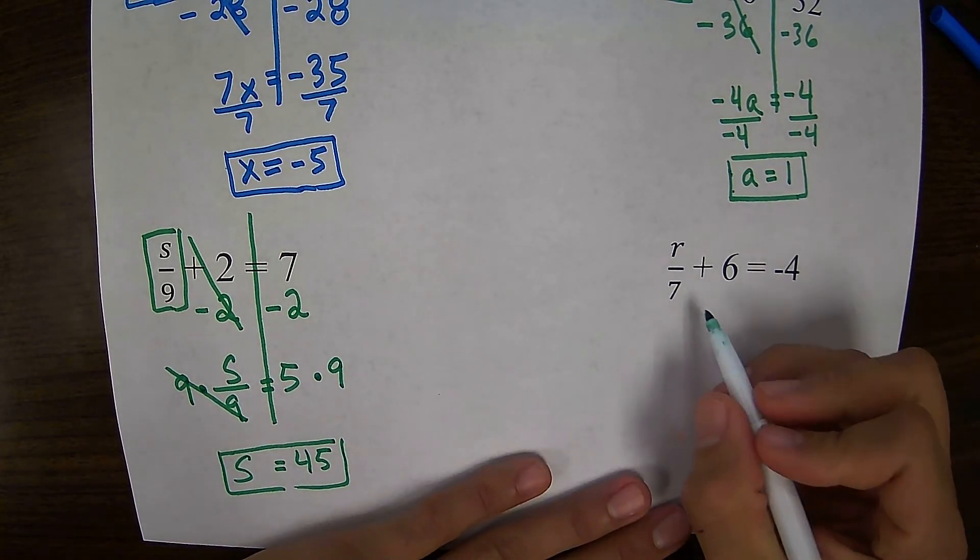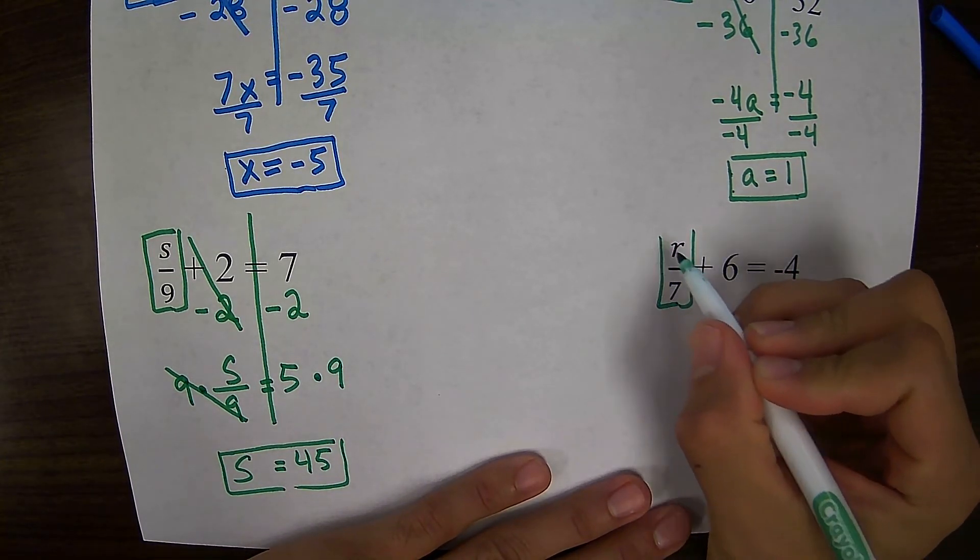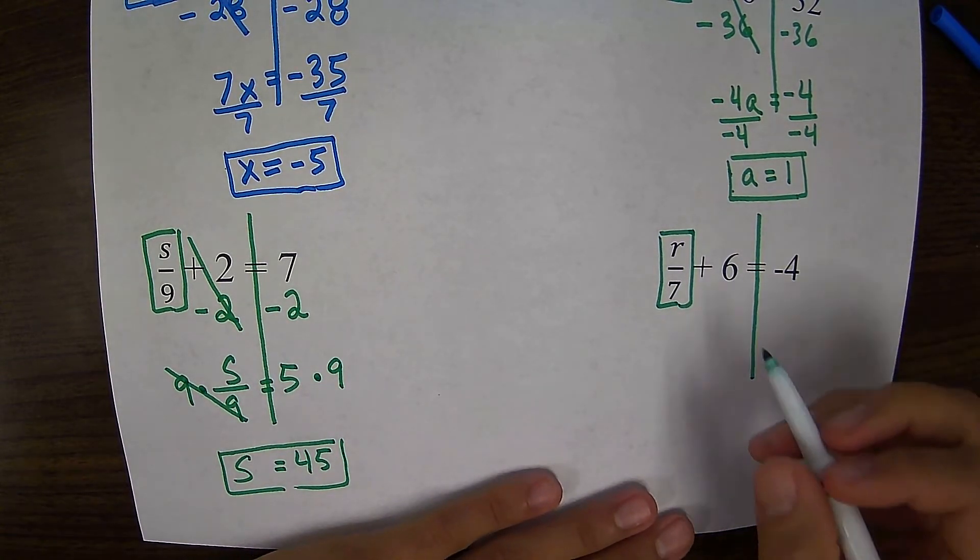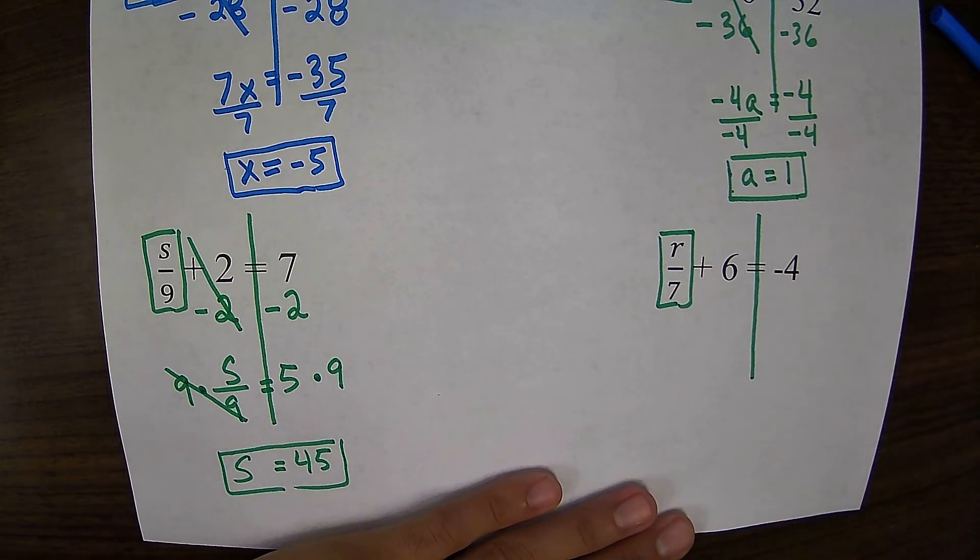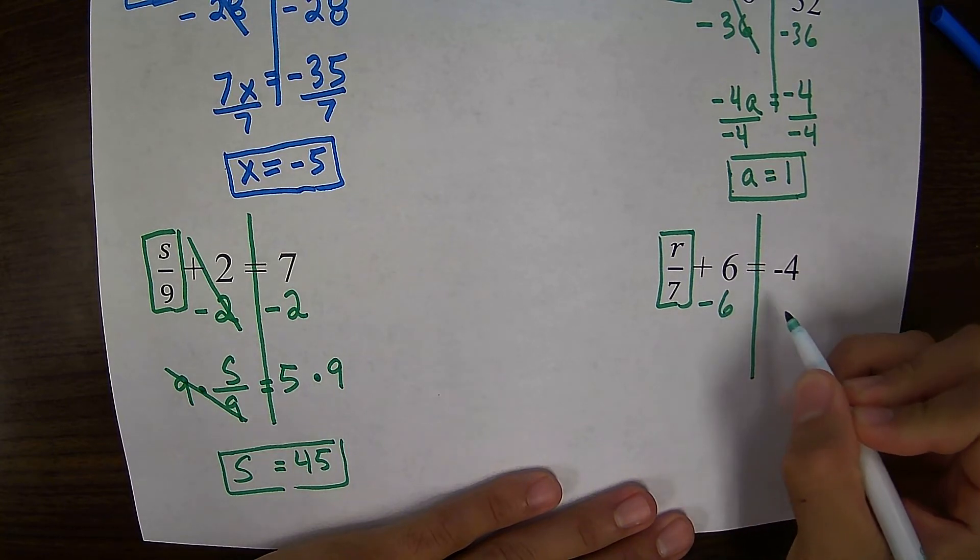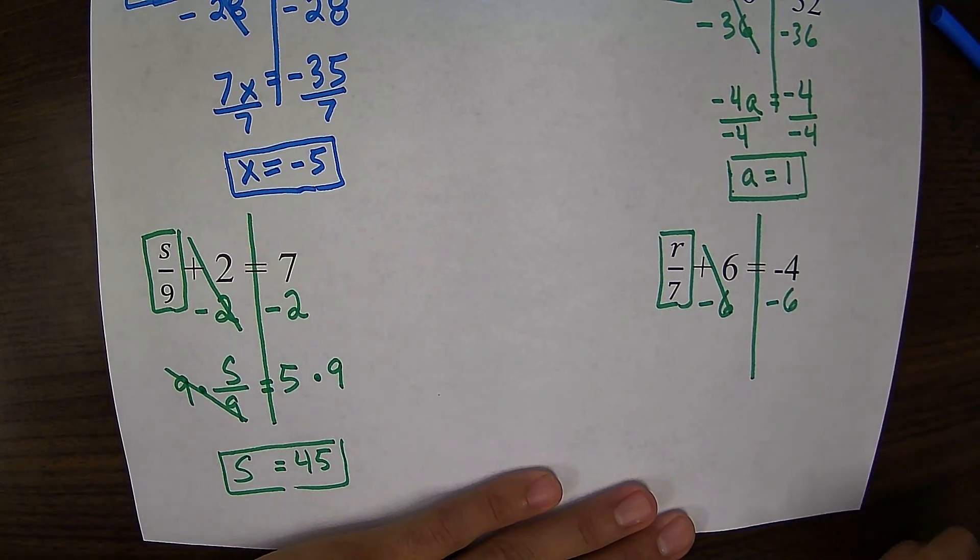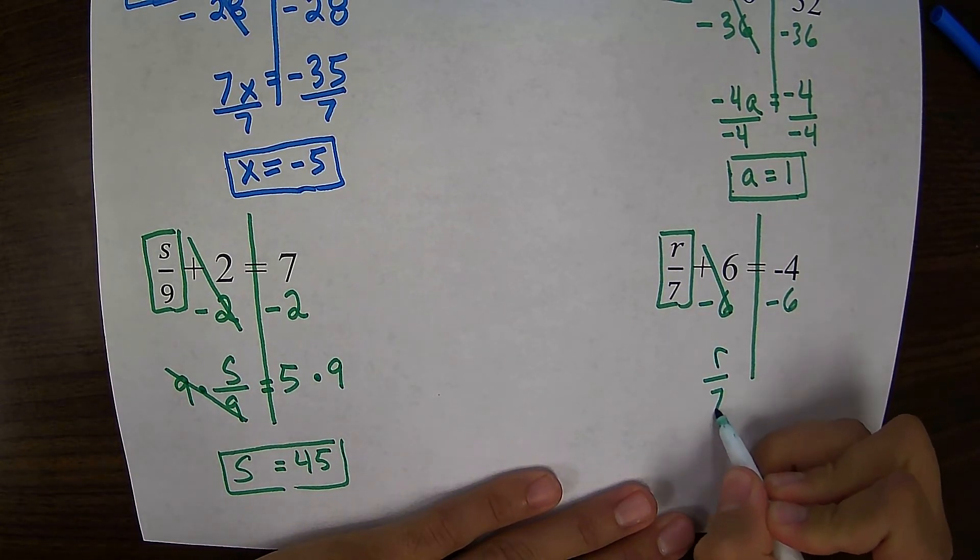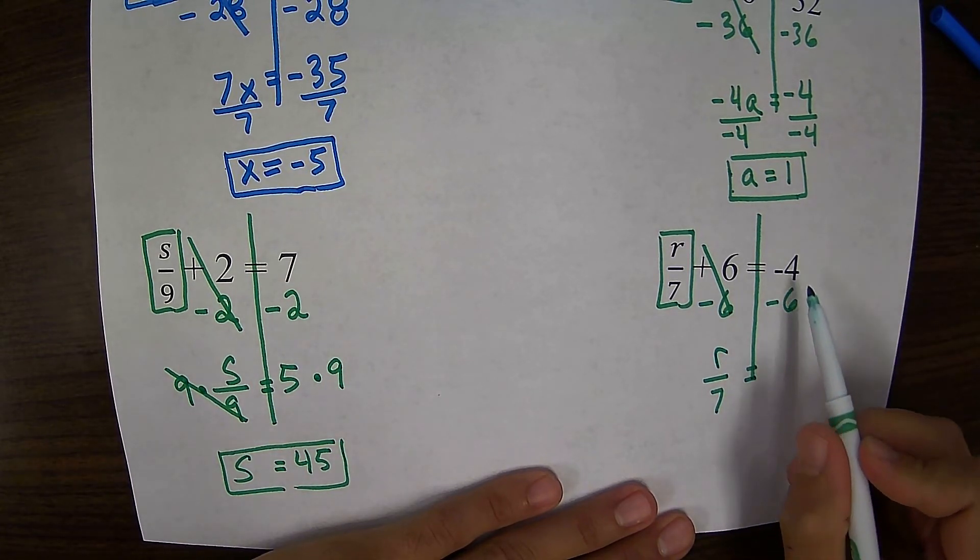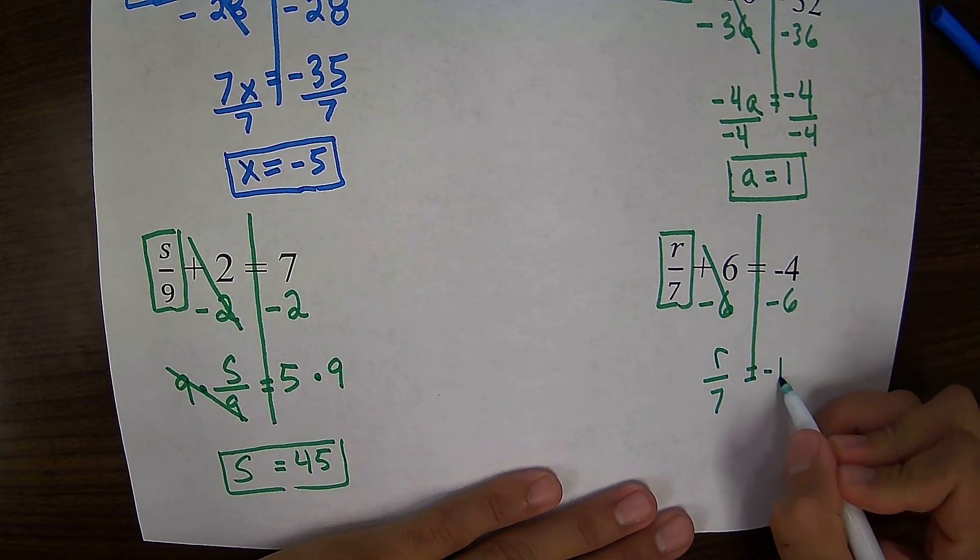Let's look at this example. r divided by 7 plus 6 equals negative 4. Box in my variable, draw my fence. I want to get r divided by 7 by itself, so I need to get rid of this plus 6 by subtracting 6. So these cancel. Bring down my r over 7. I have a negative 4 minus 6. So all I have here is 4 bad guys and 6 bad guys, so they're all just going to join together to make 10 bad guys.